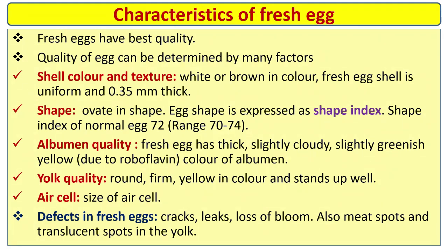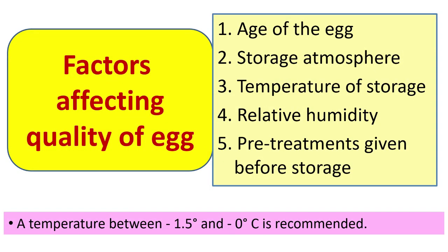Albumin is slightly greenish-yellow in color. Yolk quality: round, firm, yellow in color and stands up well. Air cell size will be different. Defects in fresh eggs include cracks, leaks, loss of bloom, meat spots, and translucent spots in the yolk. These are the characteristics of fresh egg.